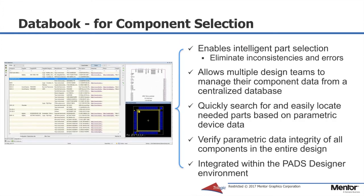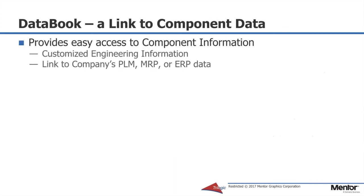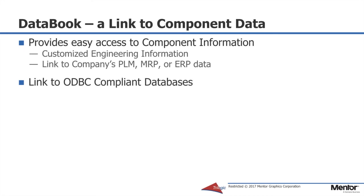This is where DataBook comes in. DataBook allows us to parametrically search the corporate parts library database to find parts to add to the design. It simplifies the access to a centralized database by multiple design teams. The engineer can quickly search for and easily locate parts based on the parametric data, and it can also be used to verify data in the design. DataBook provides a link to the component data and easy access to the component information. This allows the corporate database to be customized to the needs of the engineer and also facilitates access to the company's PLM, MRP, or ERP data. It uses a standard ODBC-compliant database interface so that it is very easy to interface to different forms of data. There are three primary uses of DataBook.